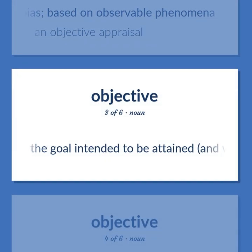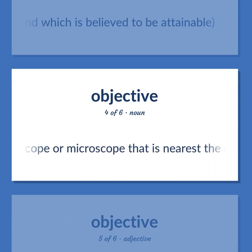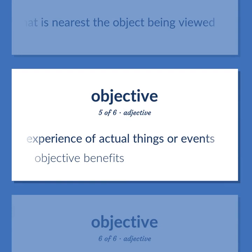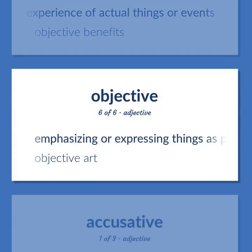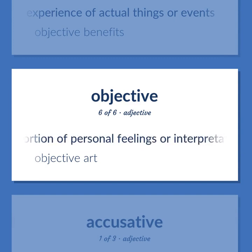Objective: the goal intended to be attained, and which is believed to be attainable. The lens or system of lenses in a telescope or microscope that is nearest the object being viewed. Belonging to immediate experience of actual things or events. Objective benefits. Emphasizing or expressing things as perceived without distortion of personal feelings or interpretation. Objective art.